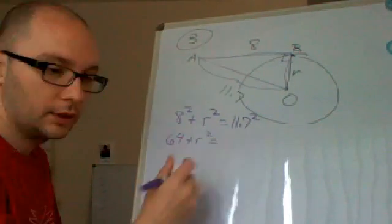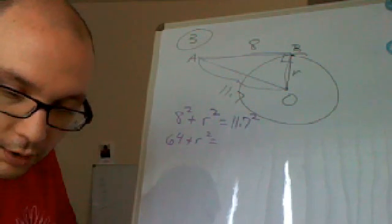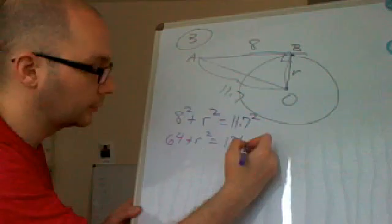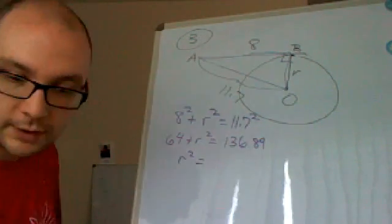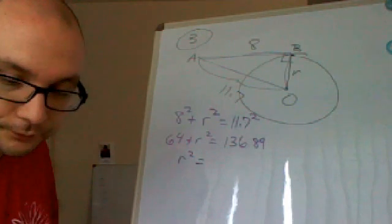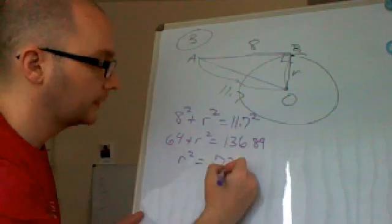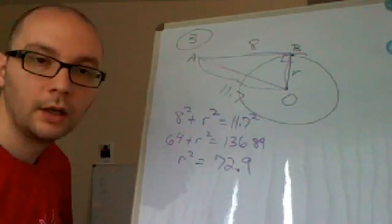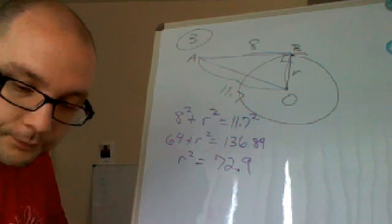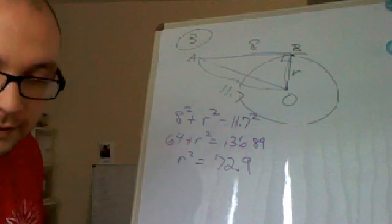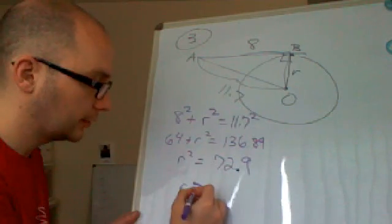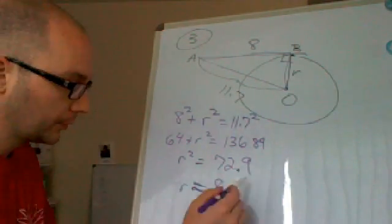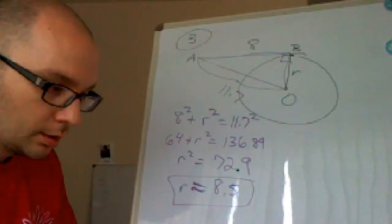I get 64 plus R squared equals, and let me calculate this out, 11.7. That gives me 136.89. I'm going to subtract 64 from both sides of the equation. Now I have R squared equals 72.9. And I'm going to take the square root of 72.9. When I do that, I'm going to get a value that's close. I'm going to round it to the nearest tenth. And I get 8.5 is what I get.